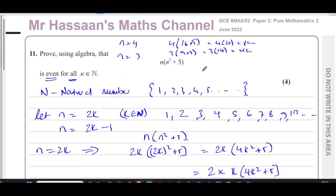Sometimes there are questions that say prove by counter example — and you may find that eventually one case doesn't follow the rule. Just because the ones before it did doesn't mean it's true for every number. So you have to prove it for every single number that exists; that's why the algebraic proof is necessary.